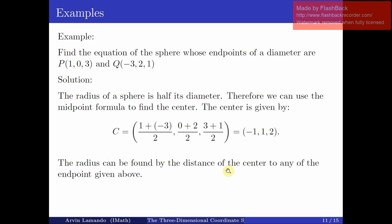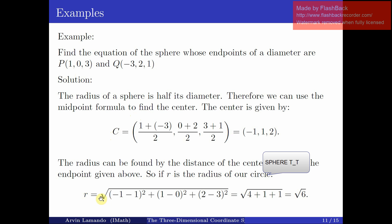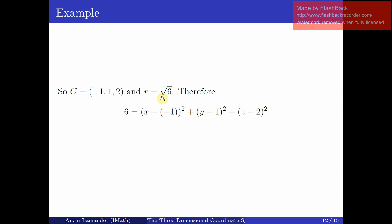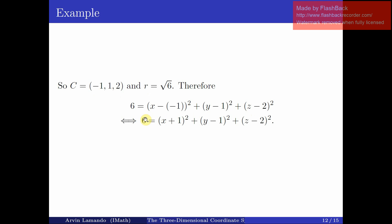The radius can be found as the distance from the center to either endpoint, since P and Q are points on the sphere. So r equals the distance between P and C, which simplifies to √6. Therefore r² = 6, and the equation of the sphere is (x-(-1))² + (y-1)² + (z-2)² = 6.